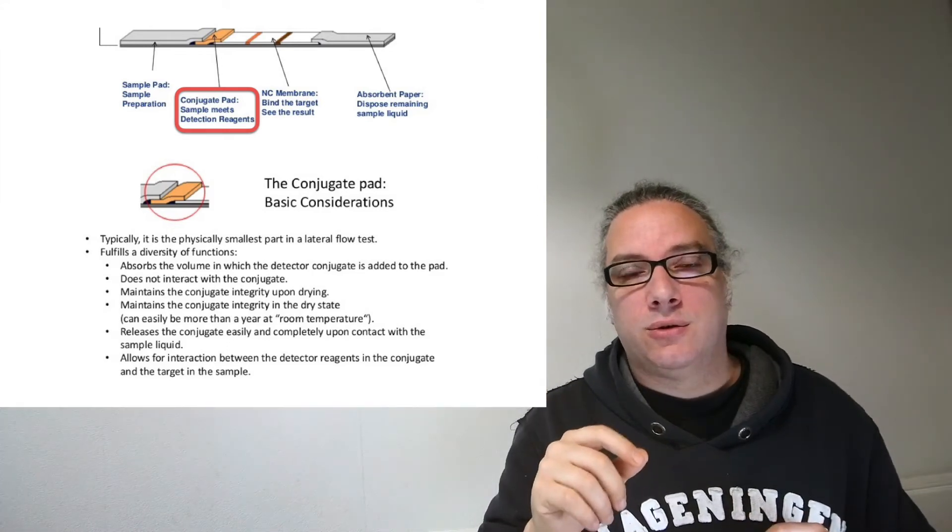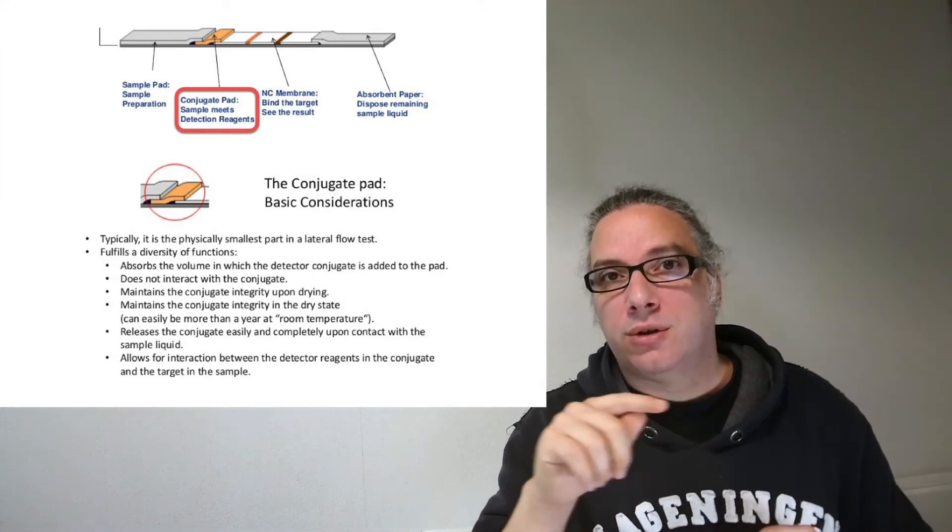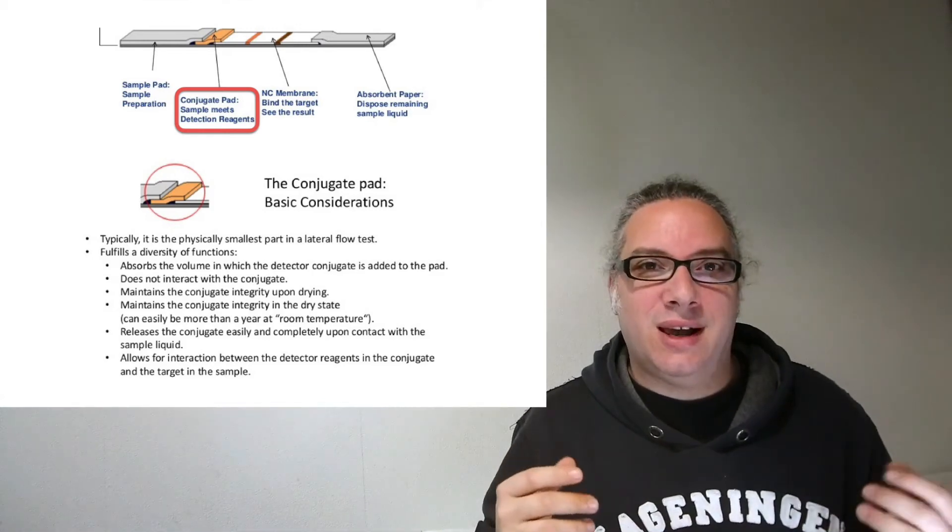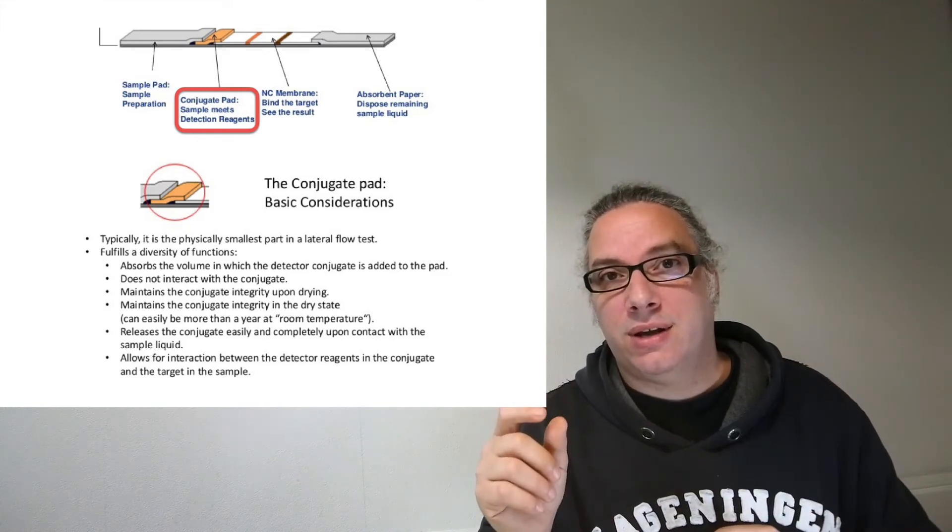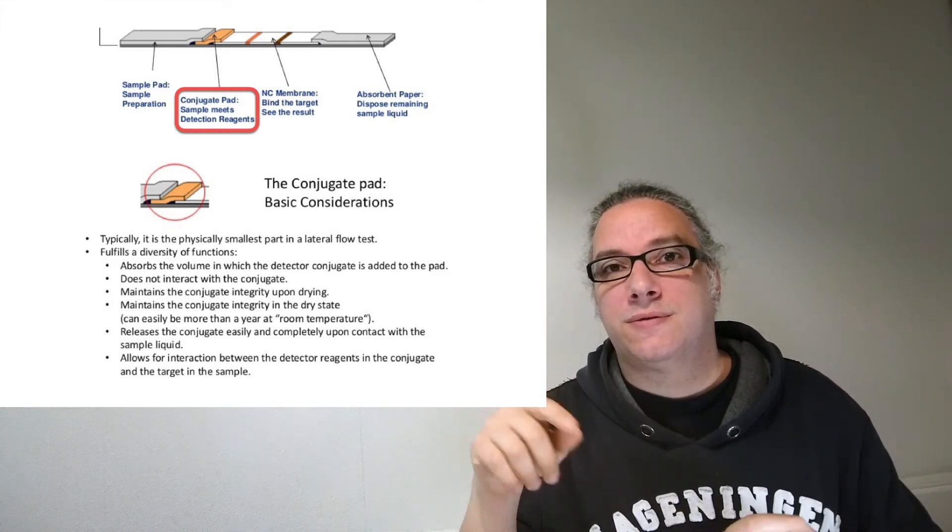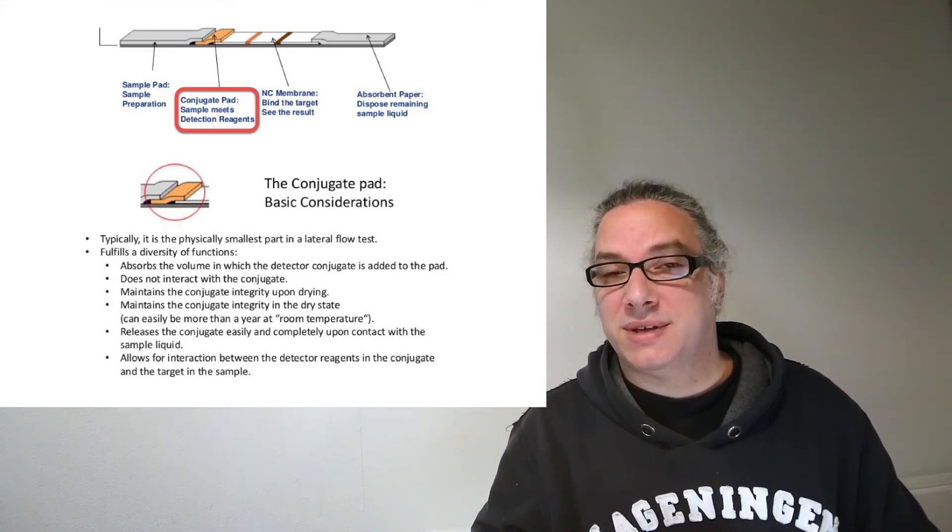You see it has a weird shape—it's not a continuous line. This really helps in mixing the different liquids: your liquid with the analyte and your reagents. You have those two curves just for simple mixing.